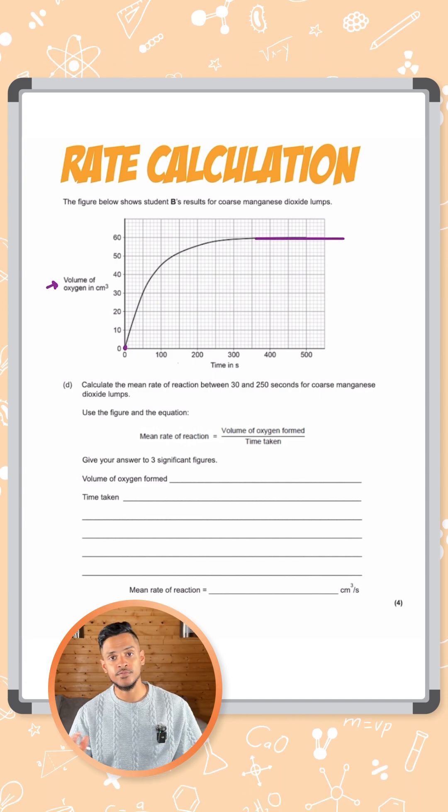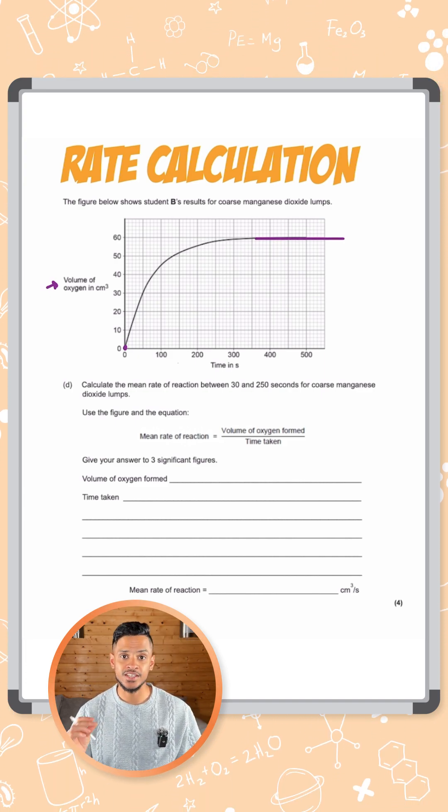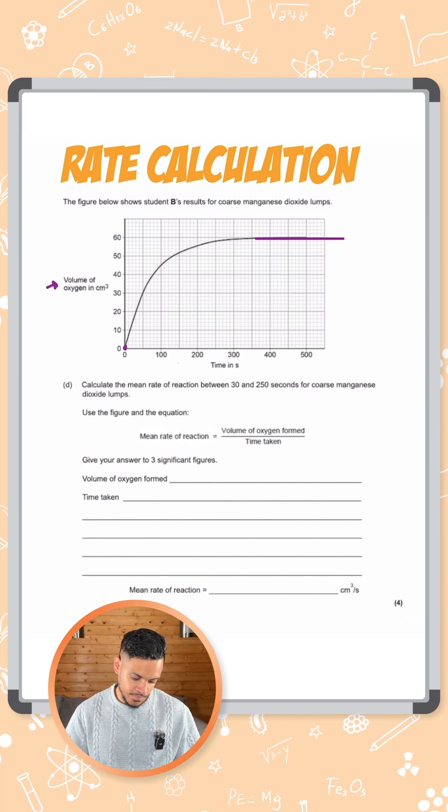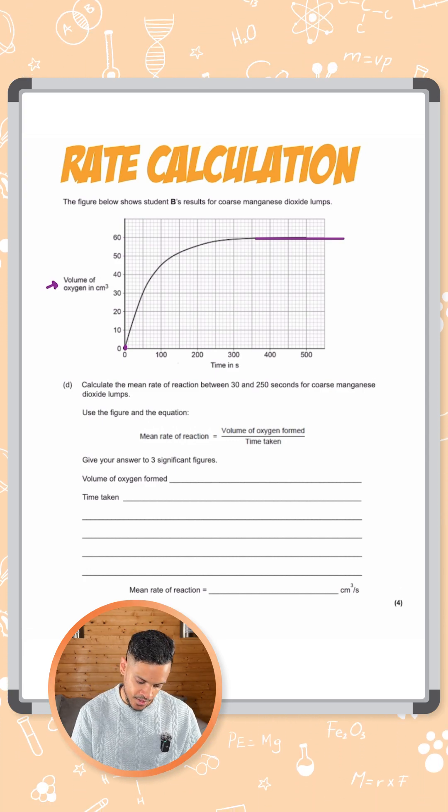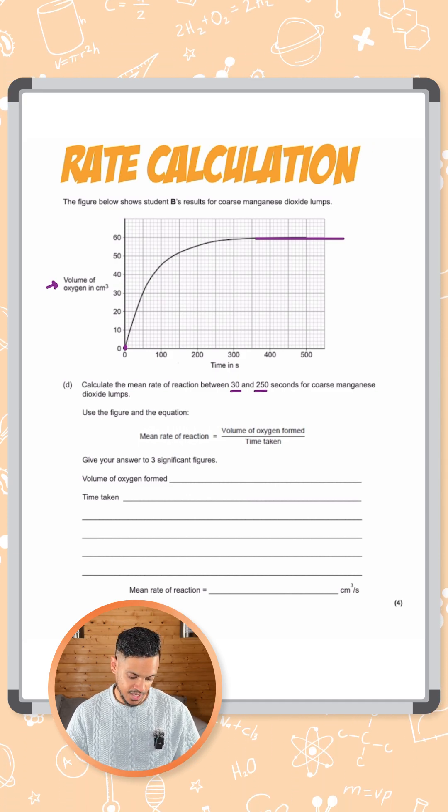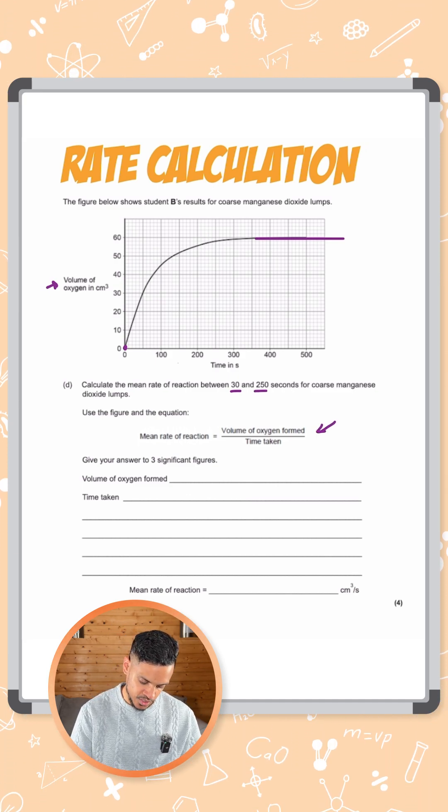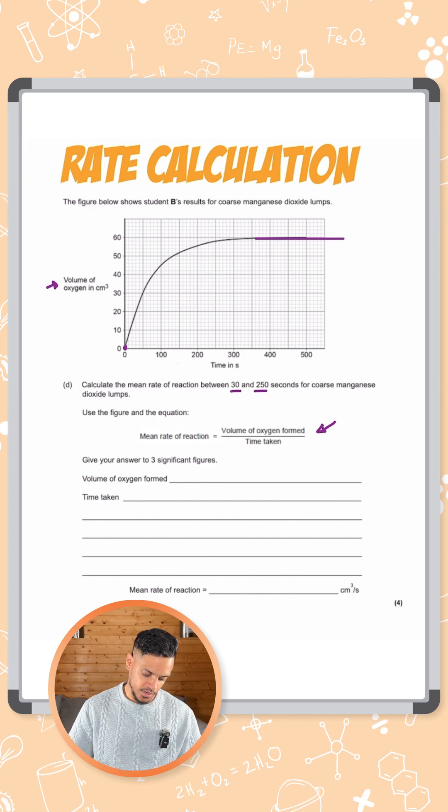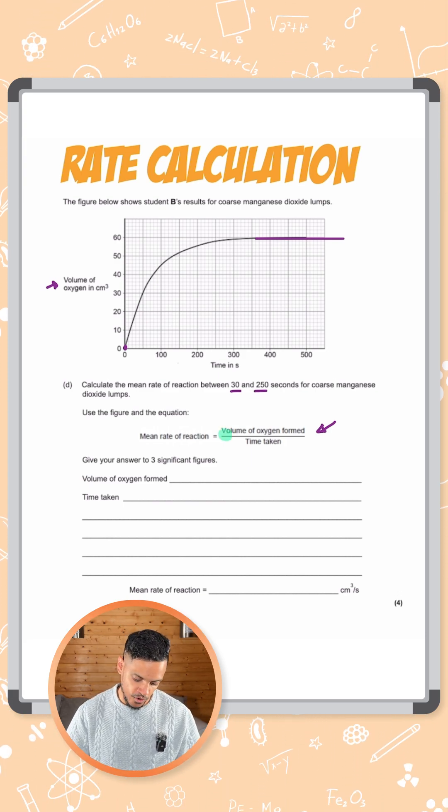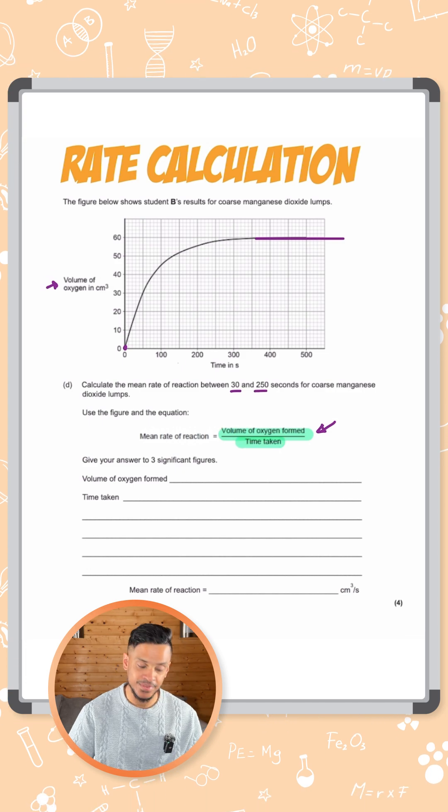Here where the reaction goes flat we can assume the reaction has finished because there's no more oxygen being produced. It says calculate the mean rate of reaction between 30 and 250 seconds for the coarse manganese dioxide lumps. They've given us an equation here to work it out and it says give your answer to three significant figures. So in that equation it says volume formed over time taken.